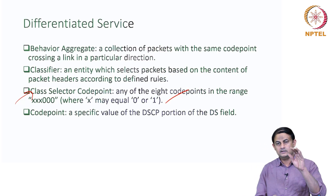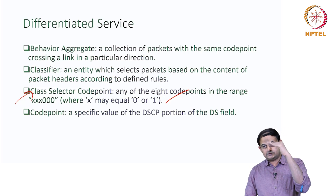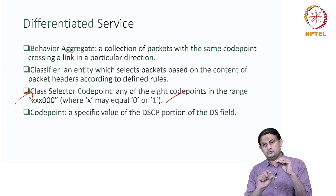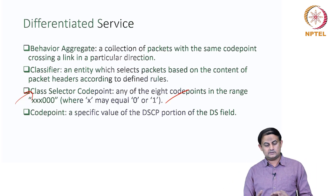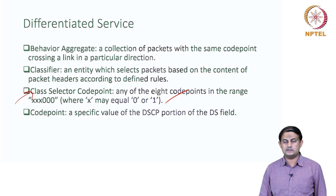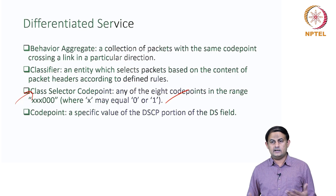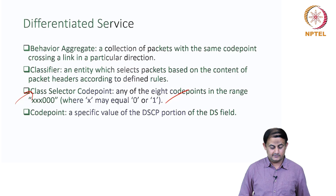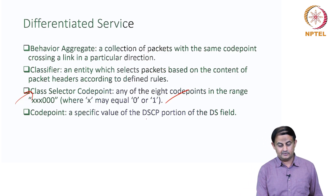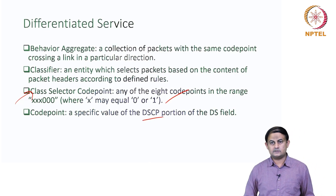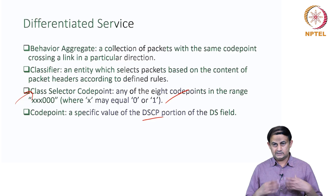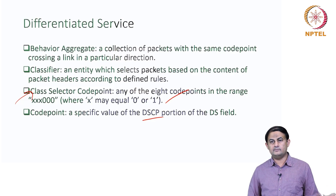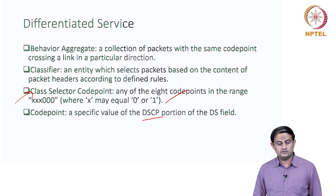The class selector is a differentiated service component that uses a set of classes. Out of those classes, you map the incoming packet to one of these classes — that's the job of the class selector. The code point is simply the number that is put into the differentiated service field, also called the DSCP field. In this field, you write a number, and that number is called the code point.